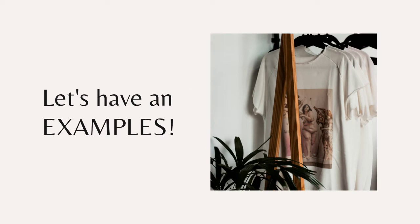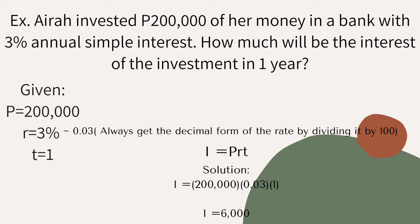Today we will have an example so you can better understand our topic. Aira invested 200,000 of her money in a bank with 3% annual simple interest. How much will be the interest of the investment in one year? The given: principal is 200,000, rate is 0.03, and time is 1. The formula is I equals P times R times T. Solution: 200,000 times 0.03 times 1 equals 6,000.